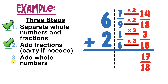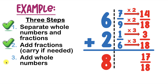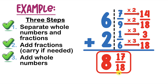Now we can get to step 3, which is to add the whole numbers. We've got 6 plus 2, and that equals 8. And just like that, we're done with step 3. That means our final answer is 8 and 17 over 18.